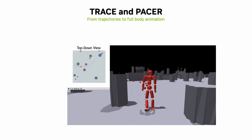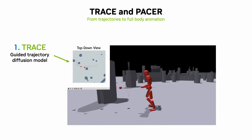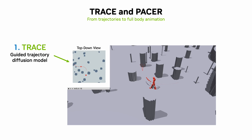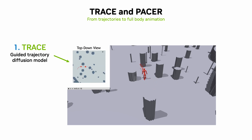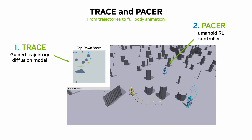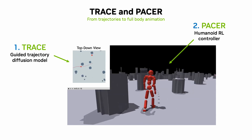We developed a data-driven system that has two main components. The first is Trace, which is a diffusion model that generates realistic trajectories and is guided at sampling time to meet user controls like avoiding obstacles and going to goal locations. Our second model, Pacer, is a robust RL controller trained to control a physics-based humanoid character to follow trajectories from Trace.